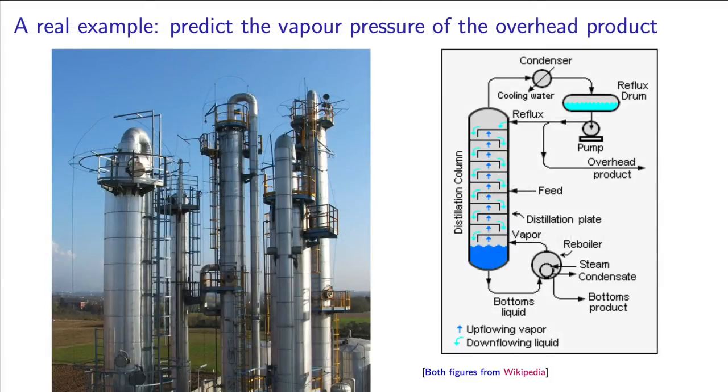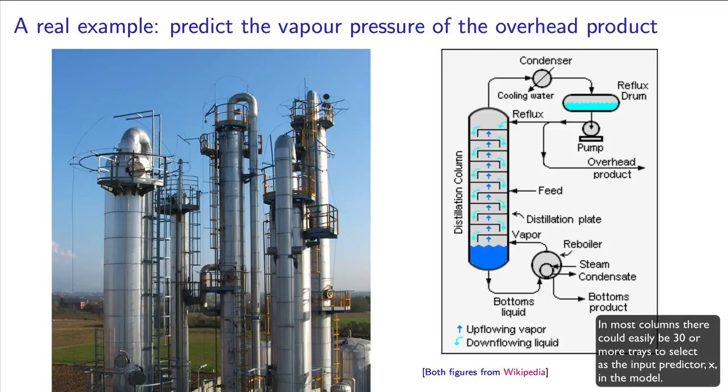For example, you might wish to predict the vapor pressure based on an input variable of the temperature in a distillation column. But which tray temperature should you use as that input variable? There are over 30 trays, and you cannot go build a model manually in Excel for each one.